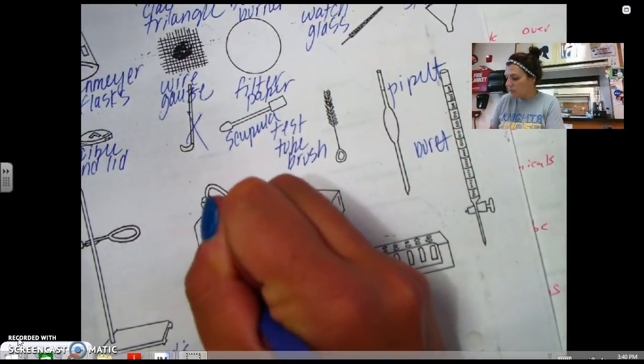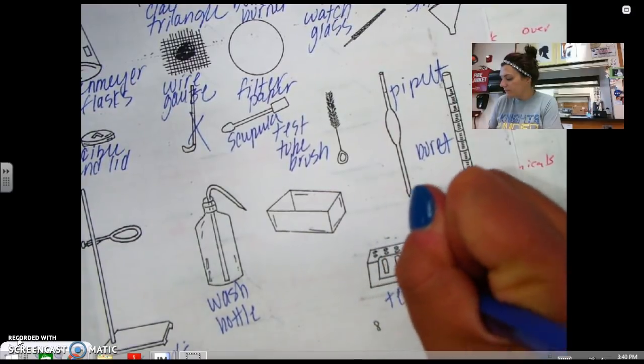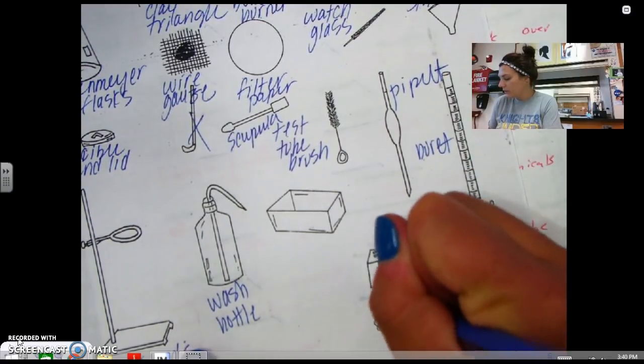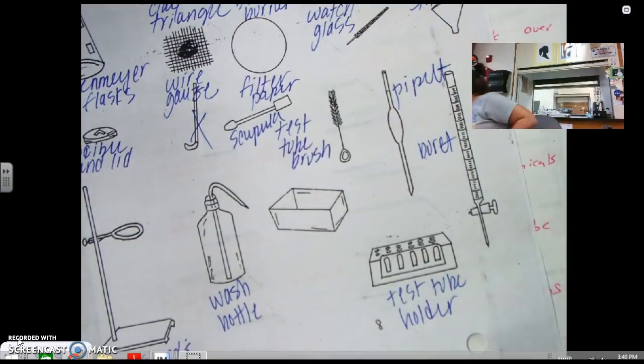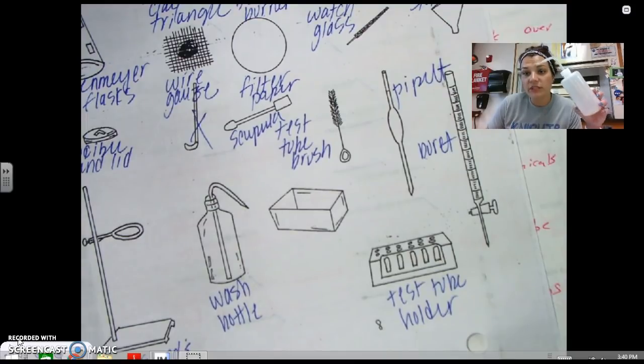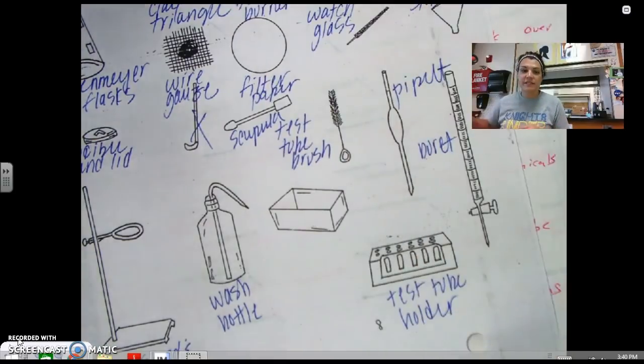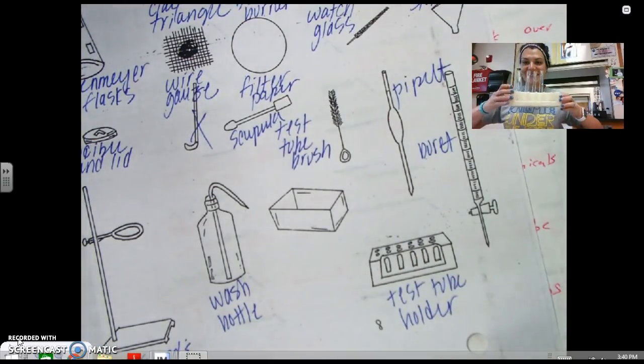the two last things. This is a wash bottle. Test tube holder. And I bet you could figure out what those things are. Wash bottles only ever have distilled water on them because we only in chemistry only deal with reactions with distilled water. And then our test tube holder obviously holds our test tubes.